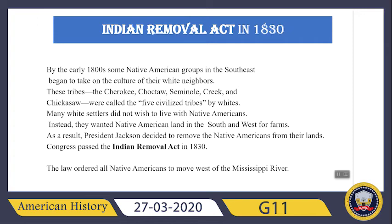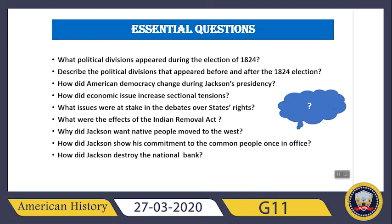Congress passed the Indian Removal Act in 1830. According to this law, the order was given that all Native Americans should move west of the Mississippi River.